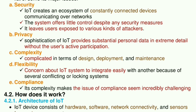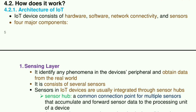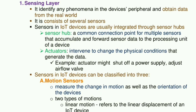How does it work? Architecture of IoT: An IoT device consists of hardware, software, network connectivity, and sensors. There are four major components. The sensing layer identifies any phenomena in the device's periphery and obtains data from the real world; it consists of several sensors. Sensors in IoT devices are usually integrated through sensor hubs — a common connection point for multiple sensors that accumulate and forward sensor data to the processing unit of a device.